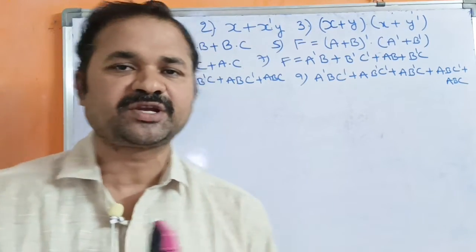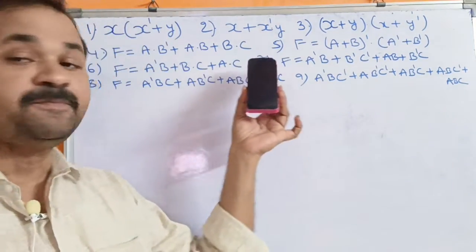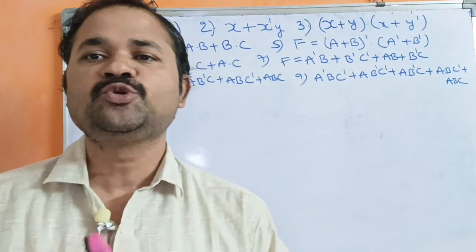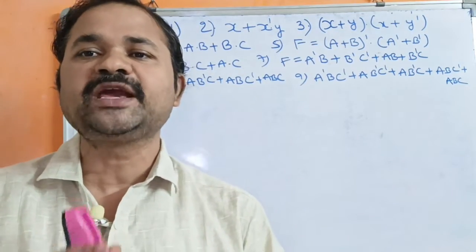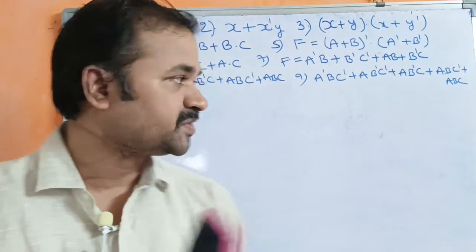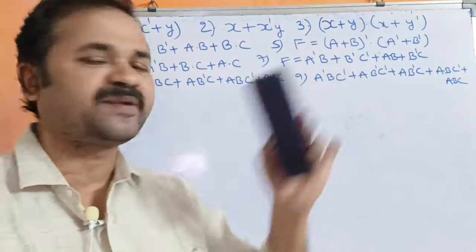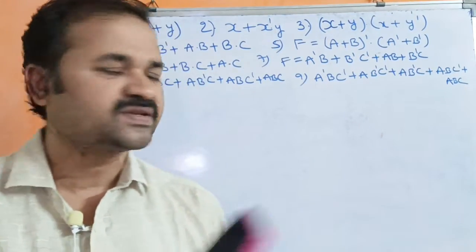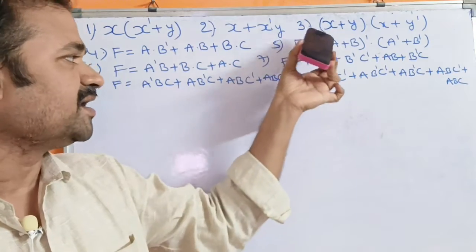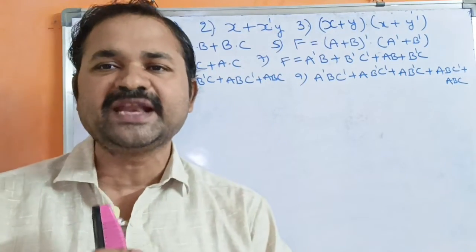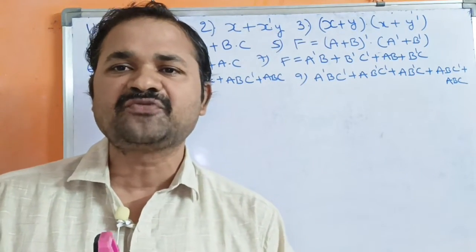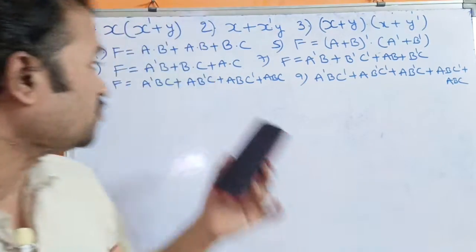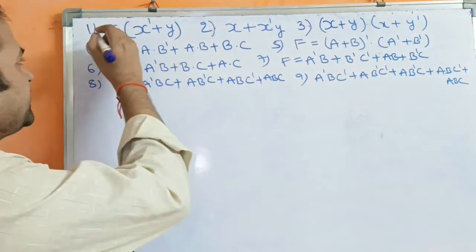Let us discuss simplification of Boolean expressions using Boolean algebra rules. Totally 9 expressions are given, and our target is to simplify all these 9 Boolean expressions with the help of Boolean algebra rules. First, let us see the first expression.